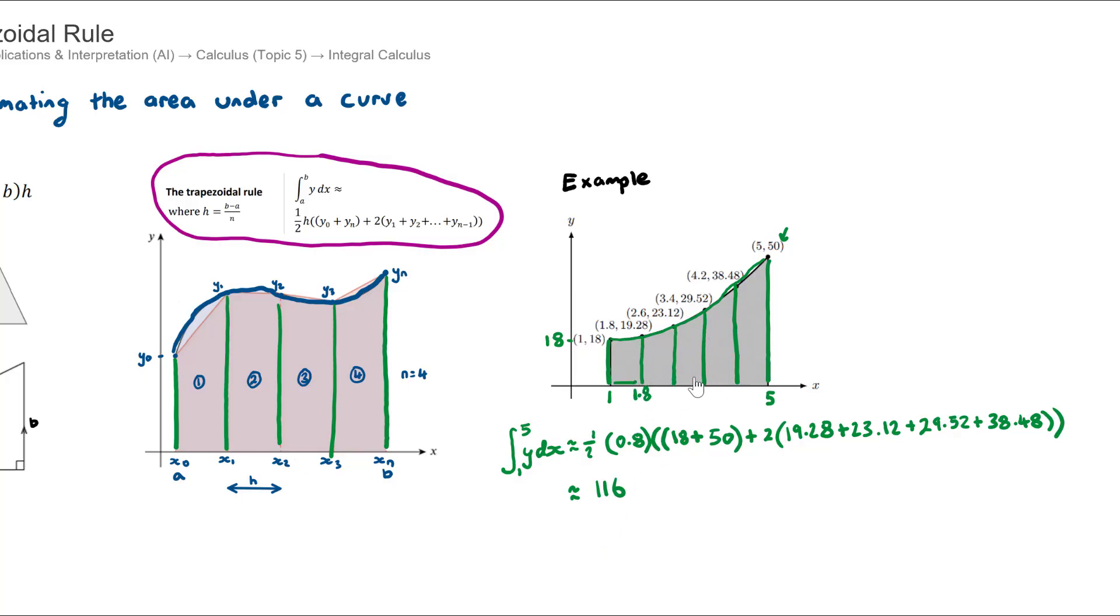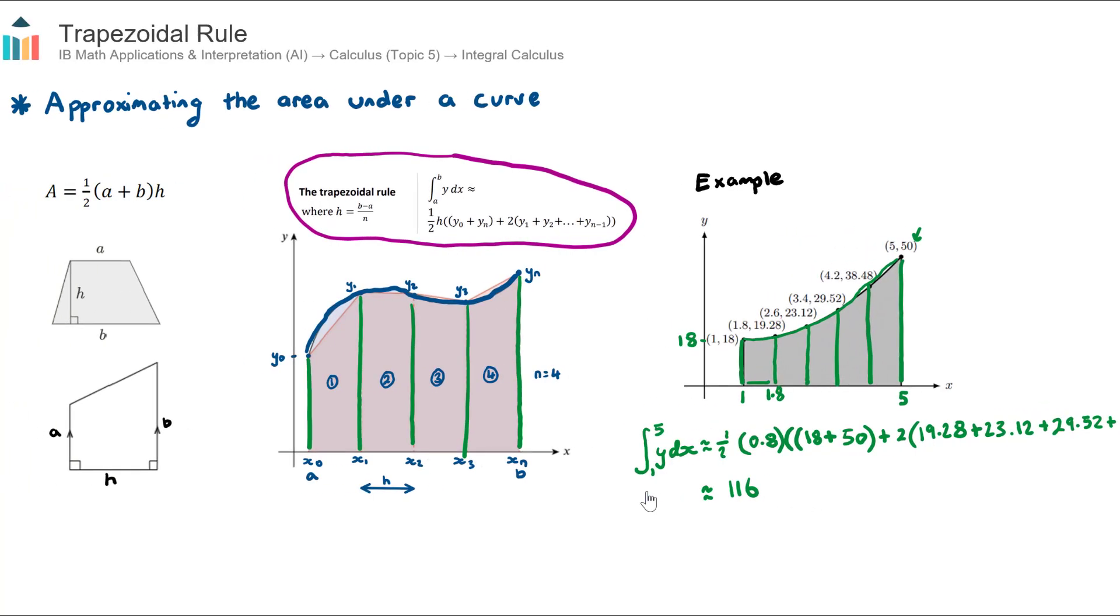And then usually in exam questions they would then in the next part give you the equation of the curve. You would need to compare the exact answer using a definite integral with the approximation and then maybe find the percentage error. But there we have it, that's the trapezoidal rule. I recommend going and practicing some of these questions over in the question bank.